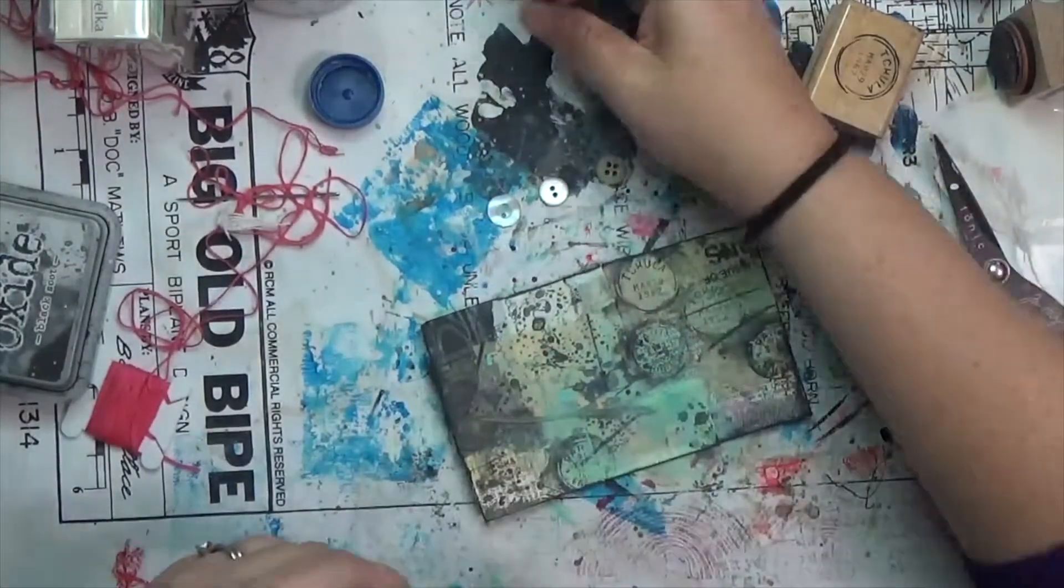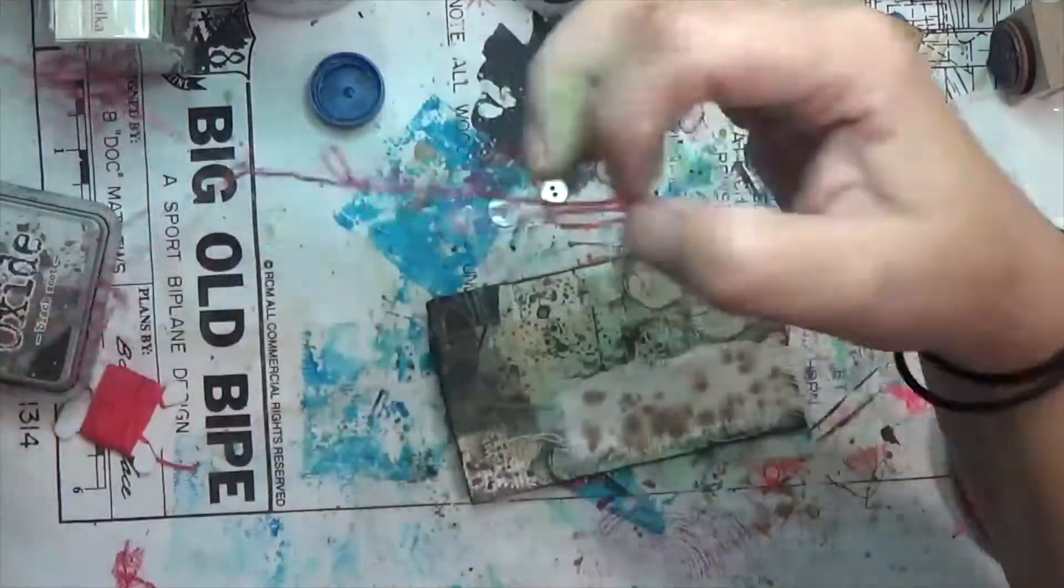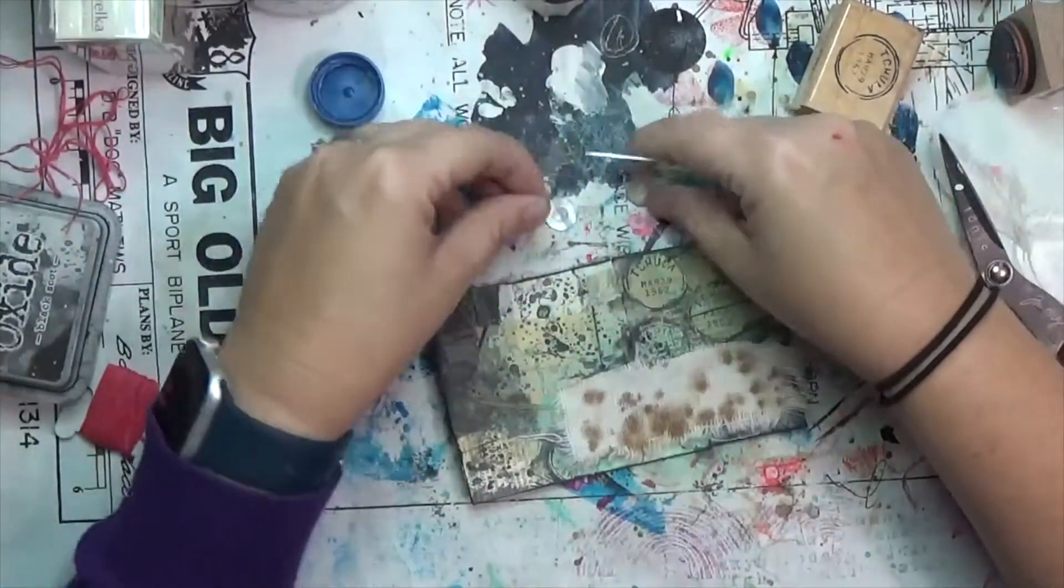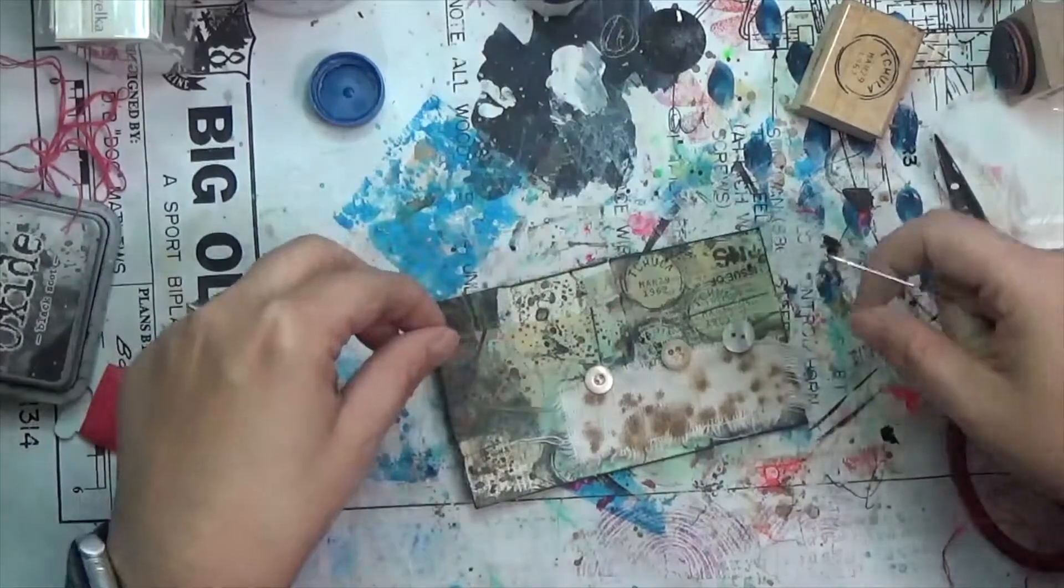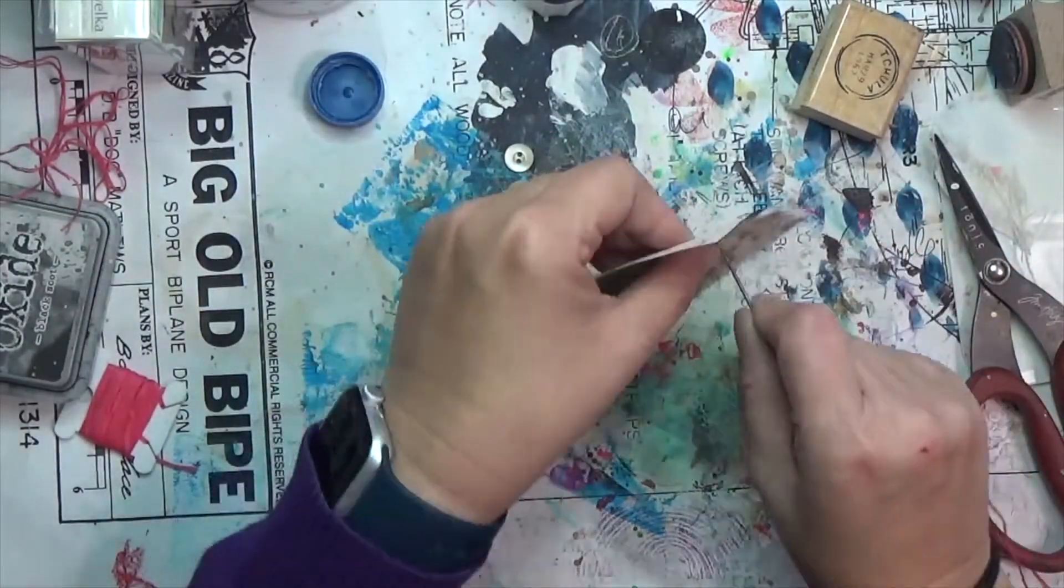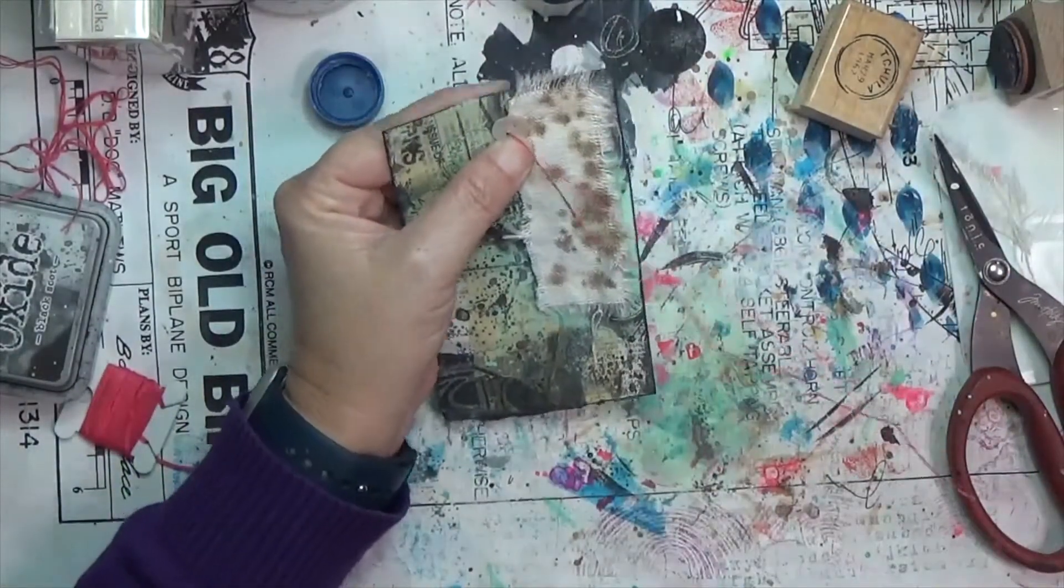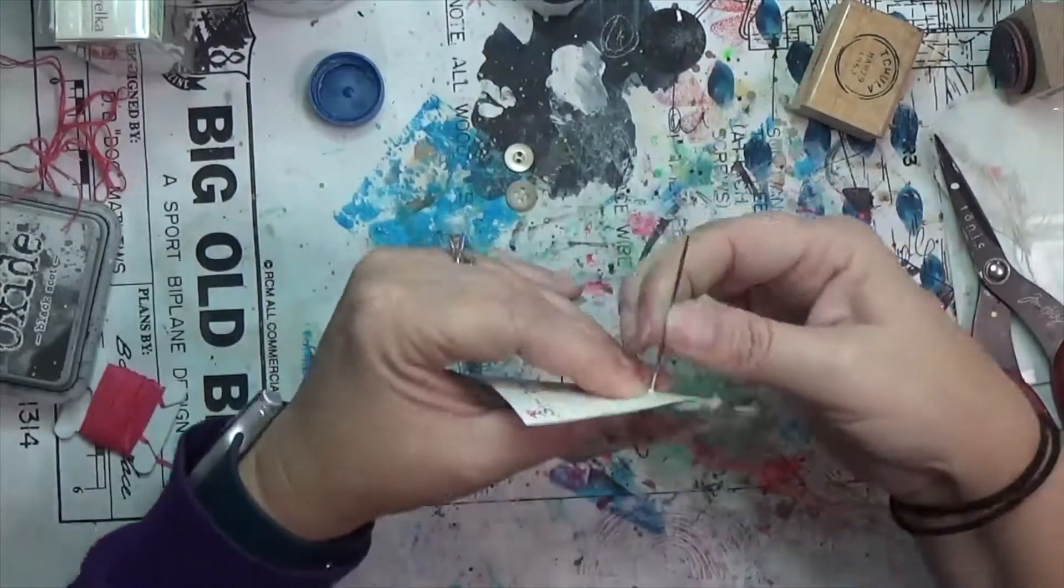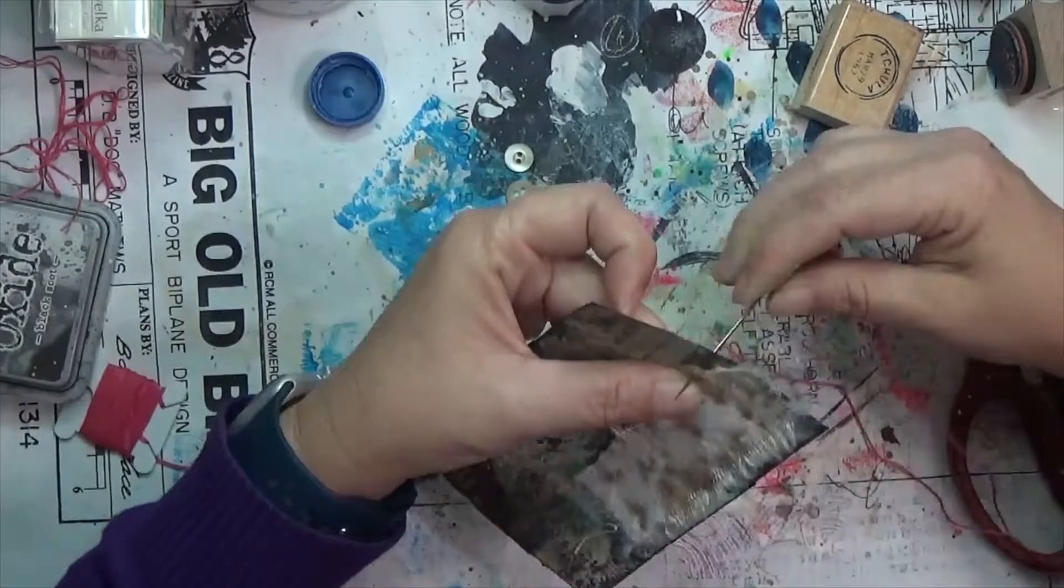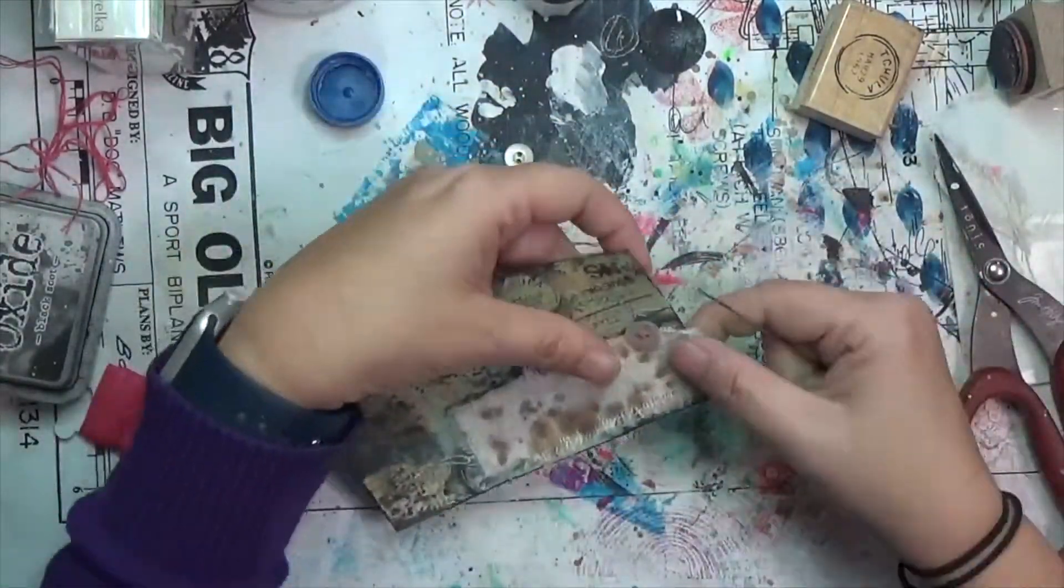I'm going to go ahead and tack down that fabric with my glue stick just so it's not flopping around while I try to sew these buttons on. Now I am not a seamstress—I don't know how you're supposed to do it, I just do it. So I do pre-punch my holes. I'll go in through the front so that I know where I want to start it.